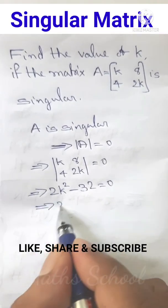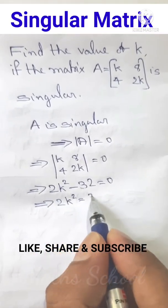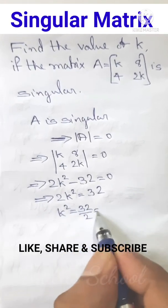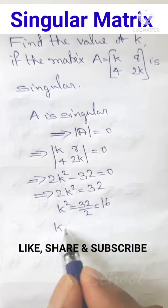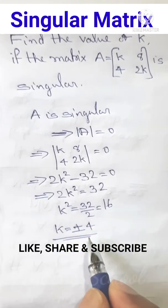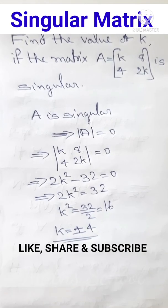Implies 2K square equal to 32. Or, K square equal to 32 by 2 equal to 16. Therefore, K equal to root of 16. That is, equal to plus or minus 4. Therefore, the required value of K is plus or minus 4.